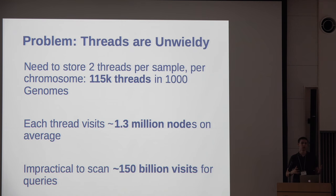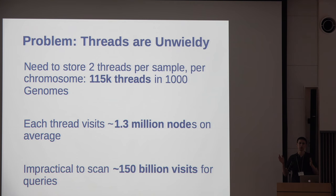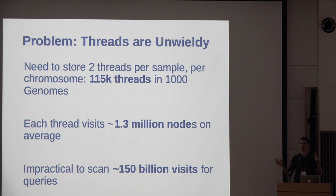The problem with using this thread model as our basic representation for haplotypes is that it can get unwieldy when we want to scale to large numbers of samples. We're going to need two threads for every sample for every chromosome, which comes out to 115,000 threads in the thousand genomes dataset alone. Since each thread has to visit each node along the chromosome, with the node sizes we've been using we get on the order of 1.3 million nodes per thread — something like 150 billion total visits of threads to nodes — where storing this as flat RDF triple stores starts to pose a problem.